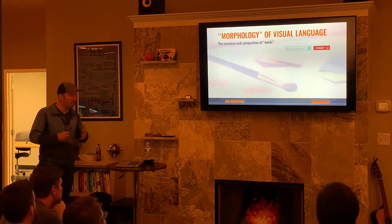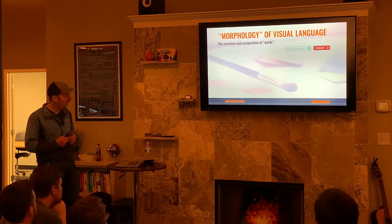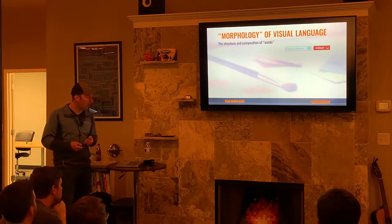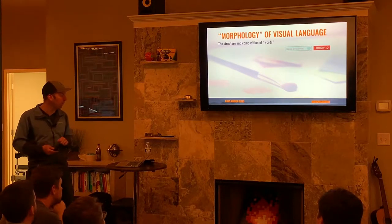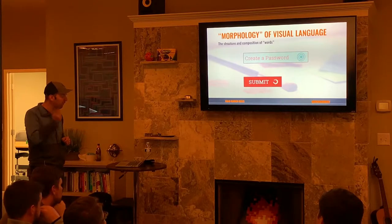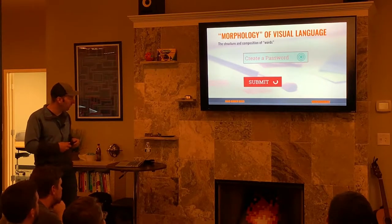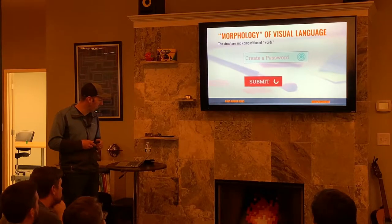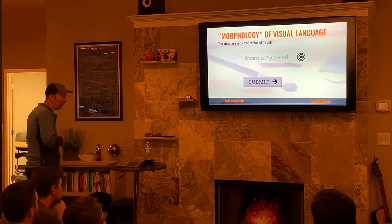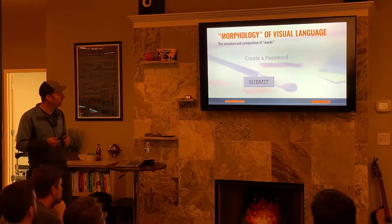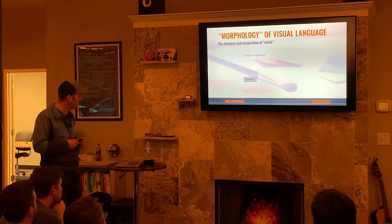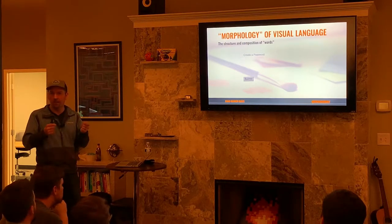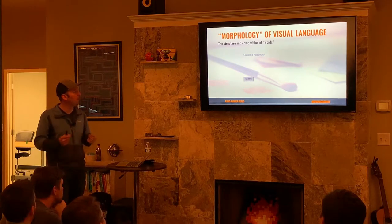Next let's talk about morphology — this notion of structure and composition of words. Here we've got two different words: an input and a submit button. You can consider those words, very complex words. Through morphology we can understand these words can be broken down into smaller pieces. We can take out animations, take out color, take out iconography — continue to remove all of these pieces and we're left with the most simple input and button. Breaking these things down, we're able to get to those smallest pieces — what are those core elements we actually use to build up these much more complex objects?